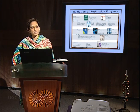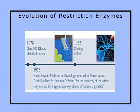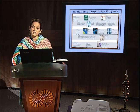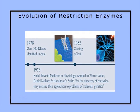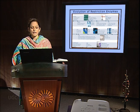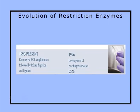Following the recognition of the importance of restriction enzymes, in the year 1978, the Nobel Prize in Physiology was awarded to three scientists for the discovery and study of restriction enzymes. Over a thousand restriction endonucleases were identified by the year 1988, followed by the adaptation of cloning methods. In the year 1996, zinc finger nucleases were developed and used as a gene disruption and insertion technology. Thus, we can see how knowledge of restriction enzymes slowly evolved with humankind.